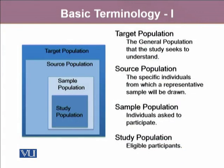Populations are further divided into different other types. The first one is the target population — it is the general population that the study seeks to understand. The second is source population, which is the specific individuals from which a representative sample will be drawn. And then there is the sample population, which includes all the individuals who are asked to participate in a study.